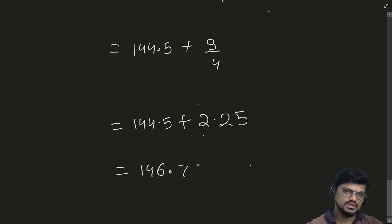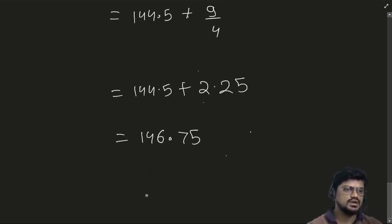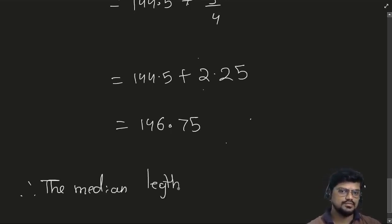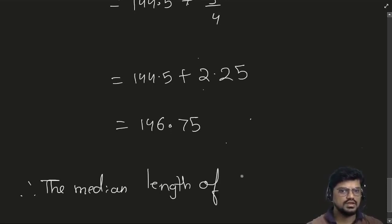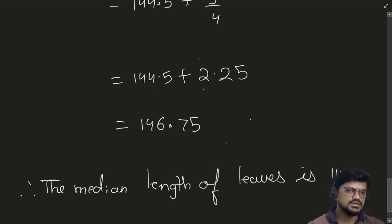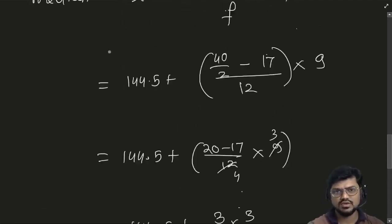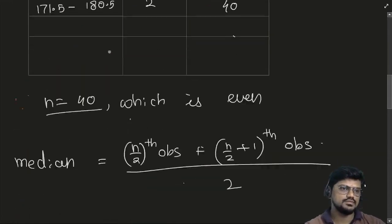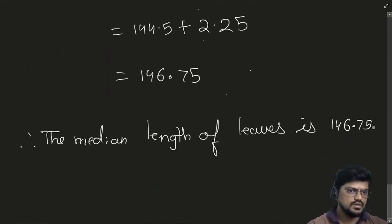Therefore, the median length of leaves is 146.75 millimetres. Is that clear to everyone?